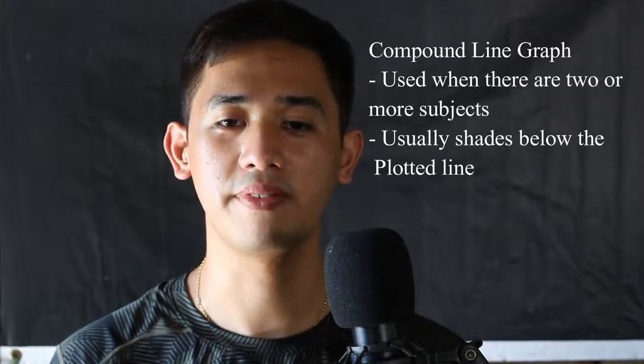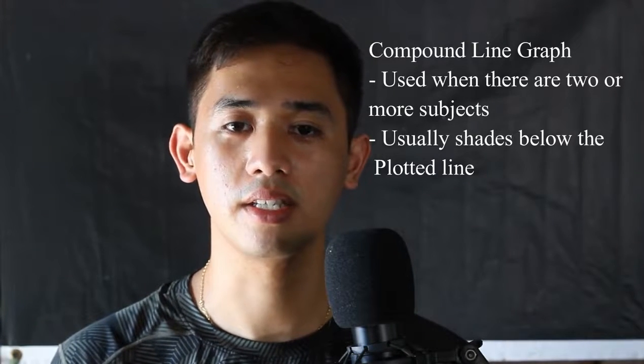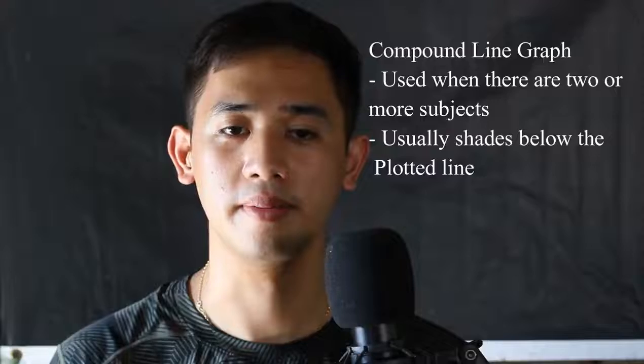Lastly, a compound line graph is used to compare two or more subjects with big differences from each other, usually shaded below the plotted data. This type of line graph is often used in geography to measure earthquakes or potential tsunamis.